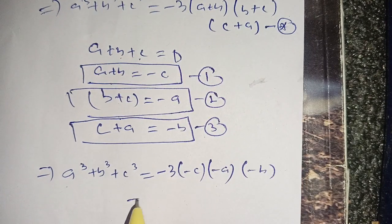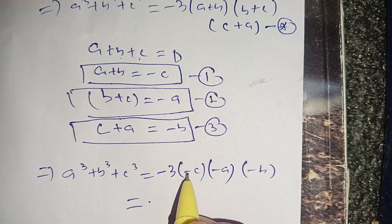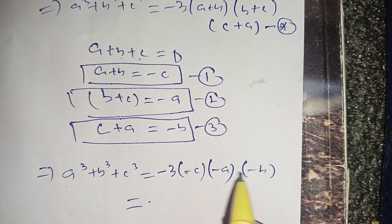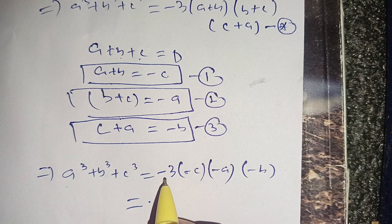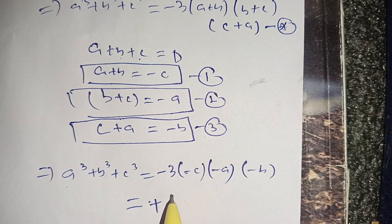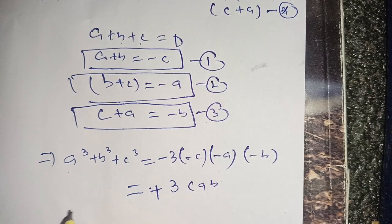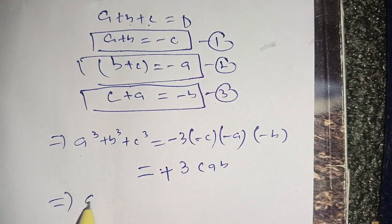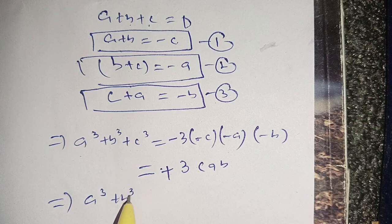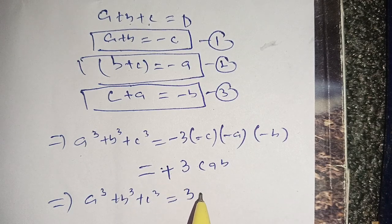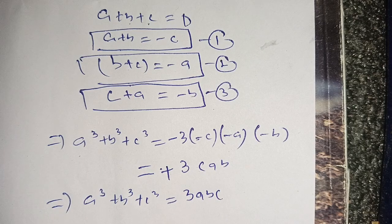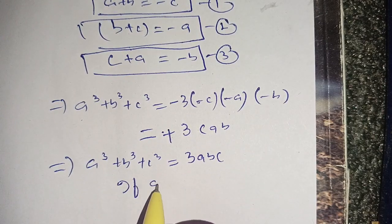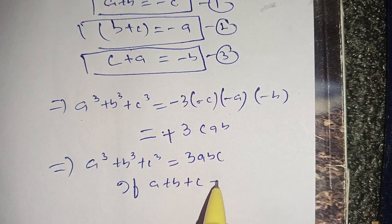Simplifying, minus 3 times minus c, times minus a, times minus b gives us: a cube plus b cube plus c cube is equal to 3abc, whenever a plus b plus c is equal to zero.